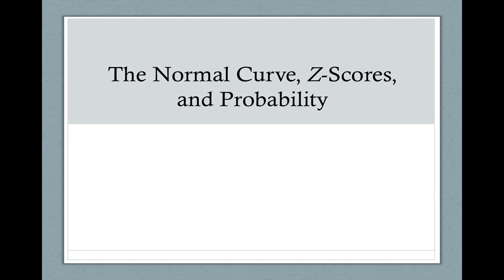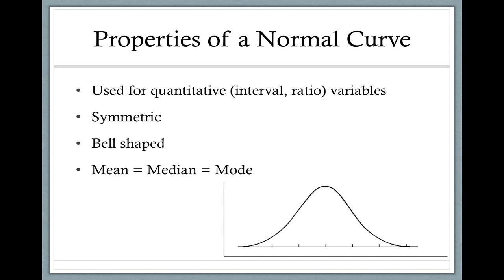First, let's do a quick recap of the information needed to fully understand z-scores and how it relates to probability. The properties of a normal curve: a normal distribution is used for continuous or interval and ratio data. The properties indicate that it is symmetric, bell-shaped, and a distribution in which the mean equals the median and equals the mode.